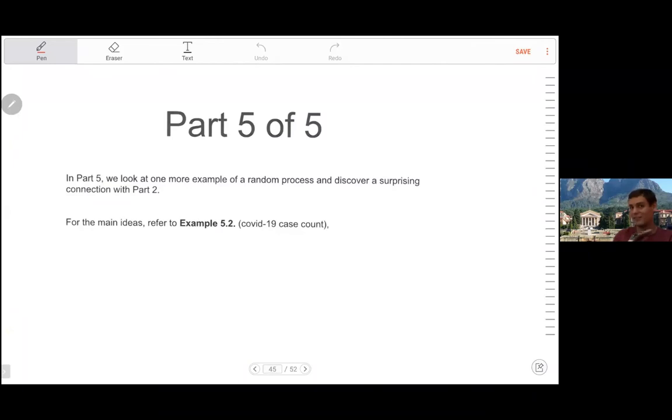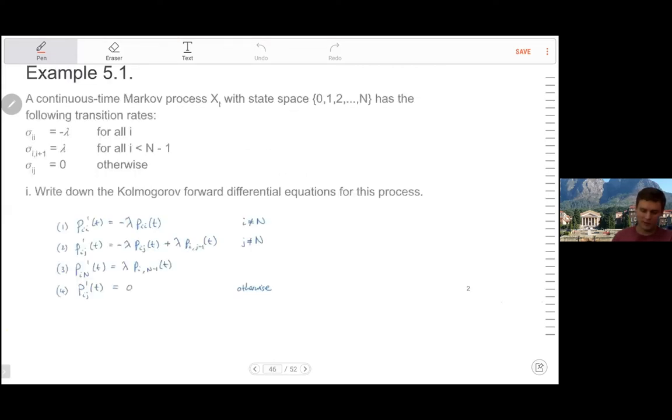In this section, we're going to look at a seemingly unrelated process called the Poisson counting process and then show a relationship with the work we've done so far. So we're going to start with a familiar example, a continuous time Markov chain, a time homogeneous as you'll see.